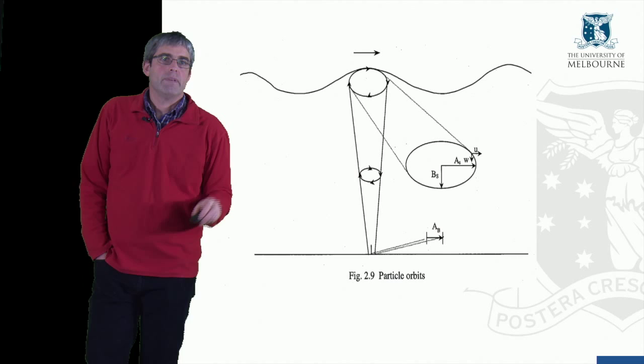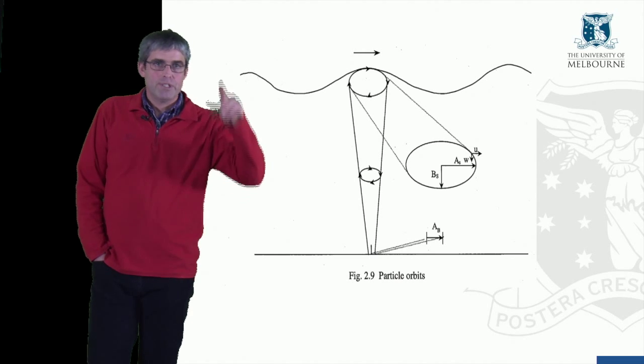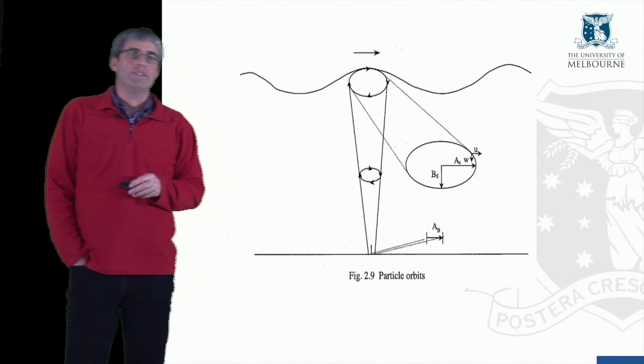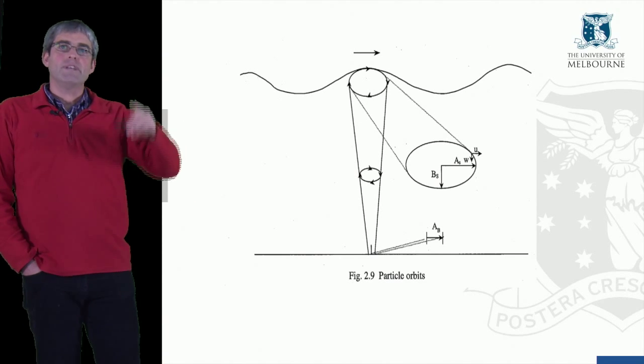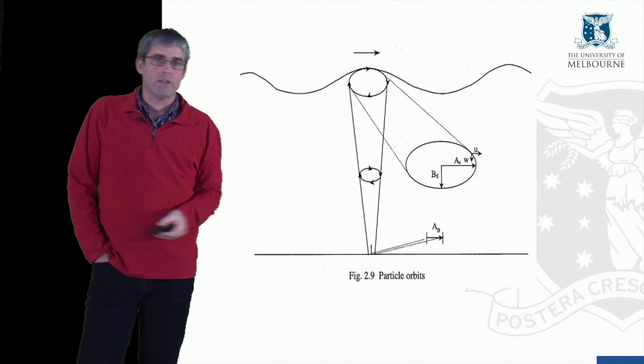And so a particle has velocity, it varies in its potential energy and pressure. It varies as it moves around this orbital pattern. So this is the transfer of energy moving and propagating across the water surface.